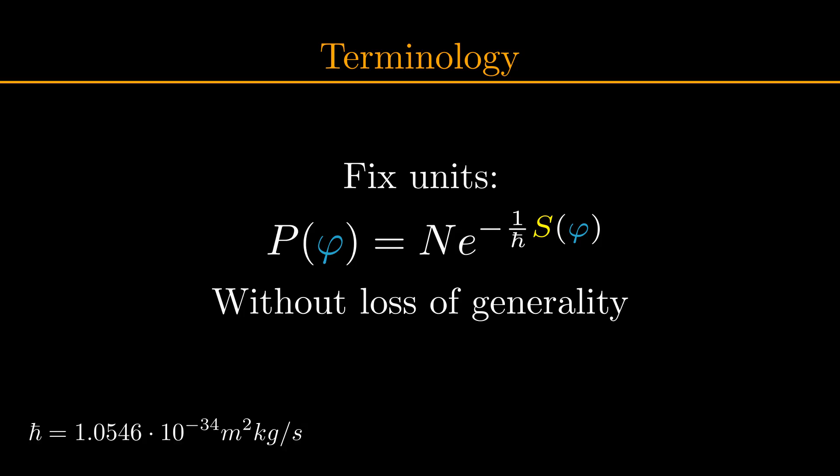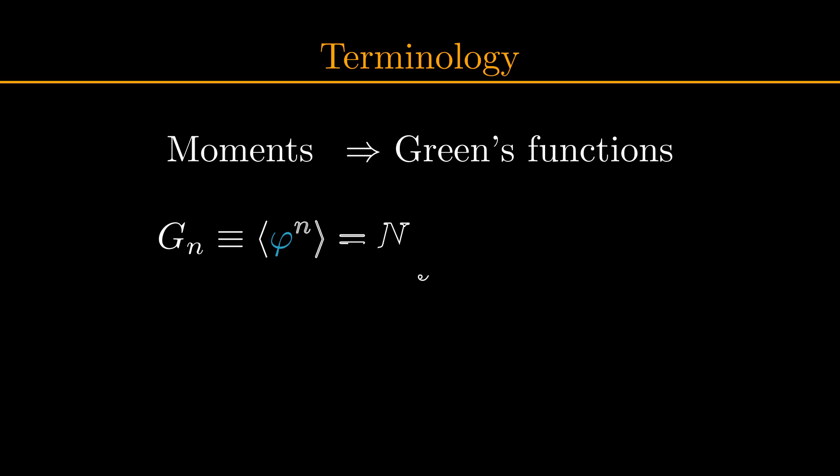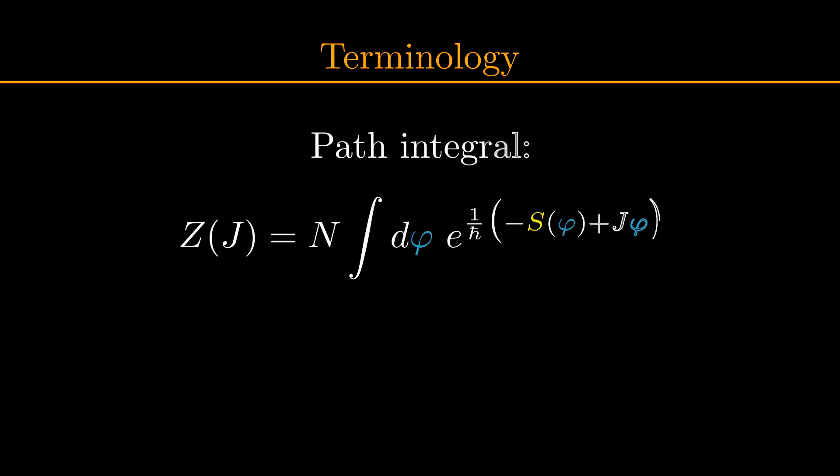Next, in quantum field theory, we don't speak of moments, but instead we call them Green's functions. So the nth Green's function is defined like this. In order to get a better handle on these Green's functions of our quantum field, we can choose to multiply the probability density with a factor e to the j phi, where j is called the source, again for reasons that will become clear later on. The integral over this new probability density is now defined as Z of J, which is called the path integral. Note that if we set j equals zero, we simply get the integral over our original probability density again.